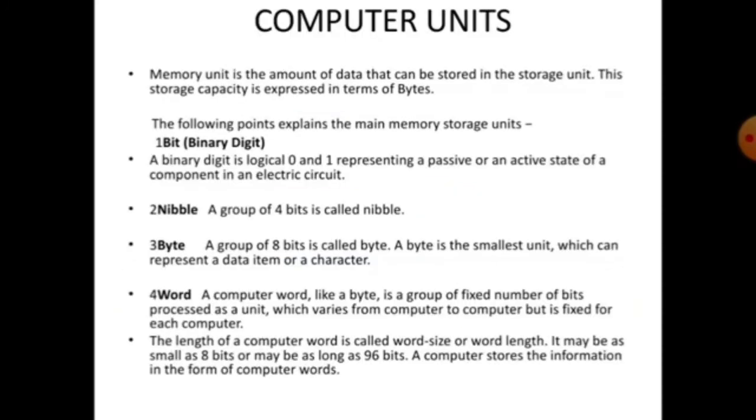Next is computer unit. Memory unit is the amount of data that can be stored in the storage unit. This storage capacity is expressed in terms of bytes. Where we store the data in our computer, that data is measured in the unit of bytes. The following points explain the main memory storage units. One - bit is the short form, whereas the full form of bit is binary digit. A binary digit is logically 0 and 1, representing a passive or an active state of the component in an electric circuit.